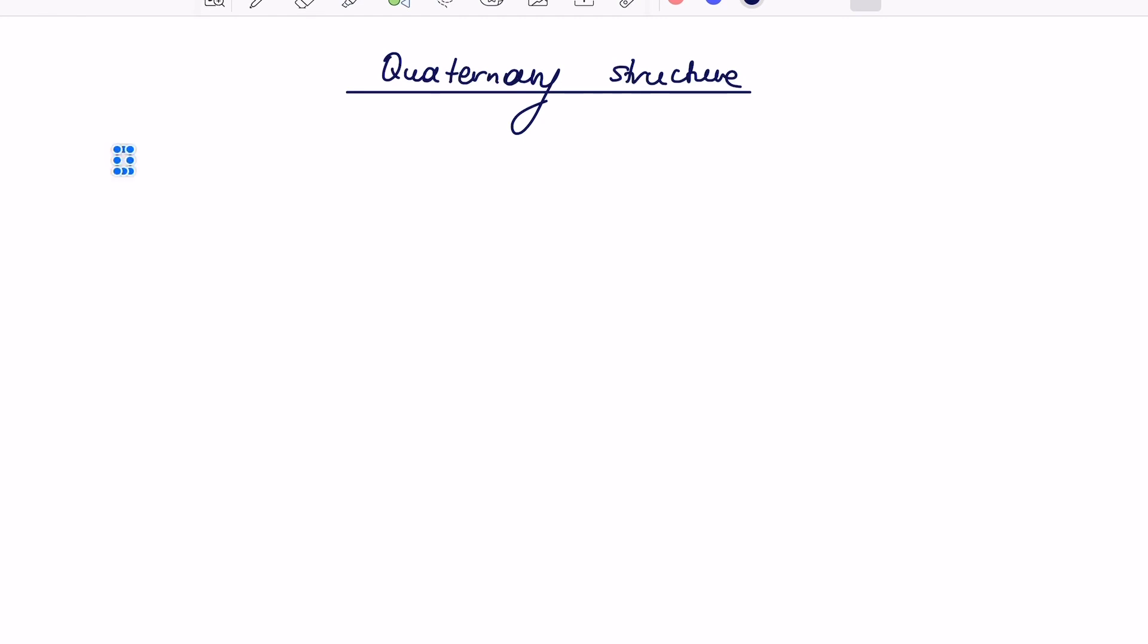So the quaternary structure or quaternary protein consists of two main components. It consists of several polypeptides and or prosthetic groups. While I'm writing this out for you to copy it down, let's discuss it.